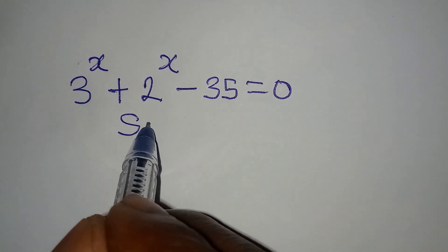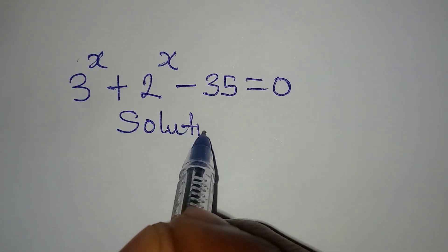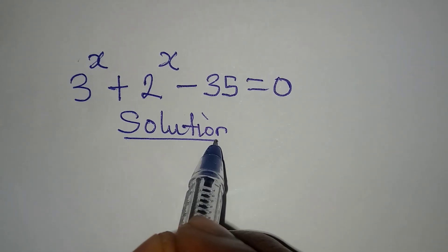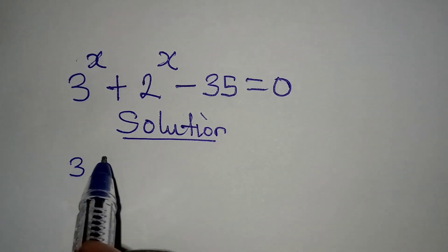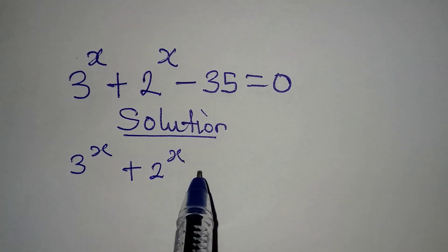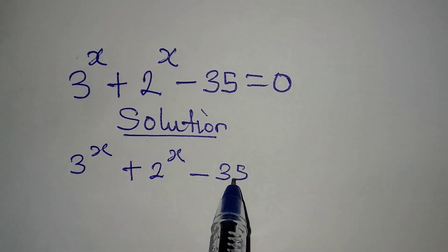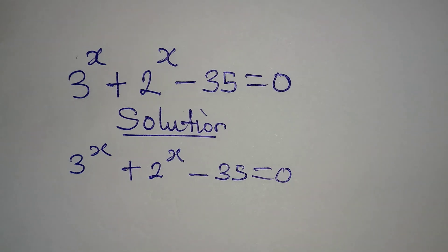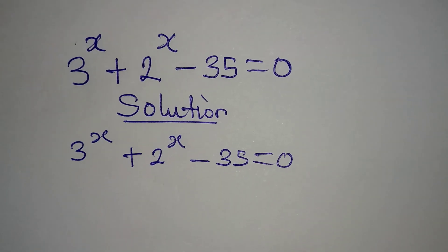Hello everyone, let's provide the solution to this problem. We have 3^x + 2^x - 35 = 0. We're going to provide only the real solution to this problem and you'll see how simple it is.